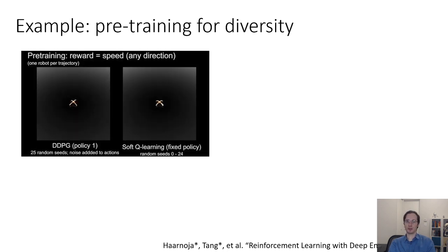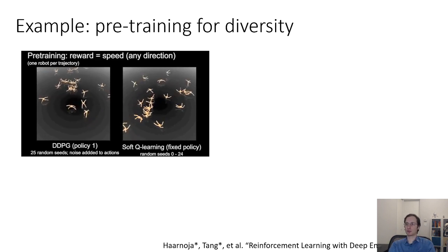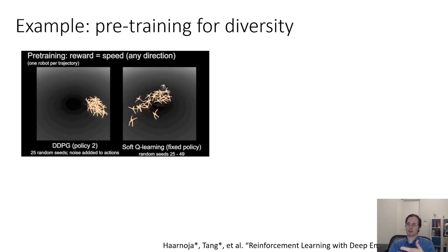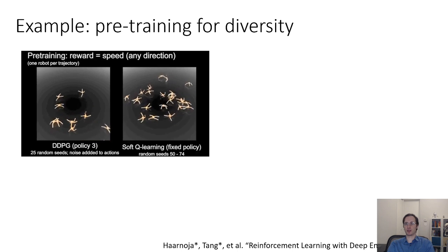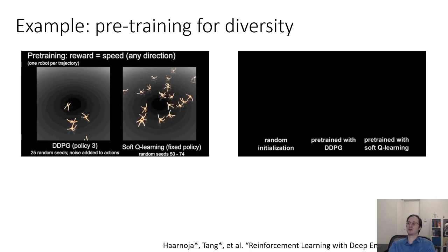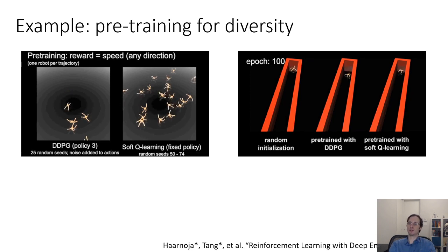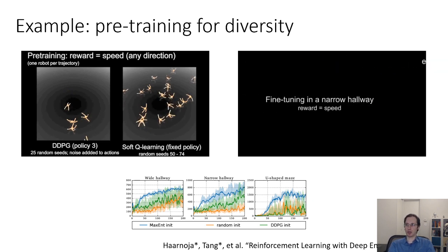Here's an example with the ant robot. On the left is a deterministic algorithm, DDPG; on the right is a maximum entropy RL algorithm called soft-Q learning. In both cases, the reward function is simply to run as fast as possible regardless of direction. The maximum entropy RL algorithm learns to run in many different directions, whereas the deterministic algorithm simply selects one direction arbitrarily. For fine-tuning, both algorithms plus a random baseline are placed in a hallway where the goal is to run in one particular direction. The deterministic algorithm has to unlearn how to run in the wrong direction and relearn the right direction, whereas the maximum entropy algorithm just has to figure out which direction it already learned is the right one — and as a result it learns much faster. We see this quantitatively: the blue line shows the maximum entropy solution, the green line shows the deterministic solution, and the orange line shows training from scratch. These are all fine-tuning learning curves.